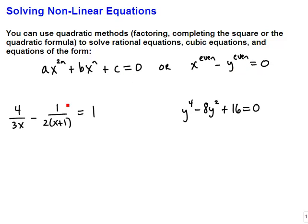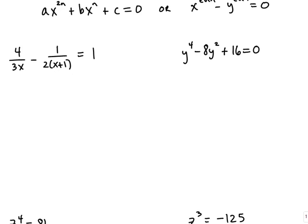In this first example we have a rational equation. If you recall, the first thing you want to do when you solve a rational equation is multiply through by a common denominator. In this problem our common denominator is going to have a 3, an x, a 2, and an x plus 1 in it. None of these are common factors, so our common denominator is going to be 6x(x + 1).